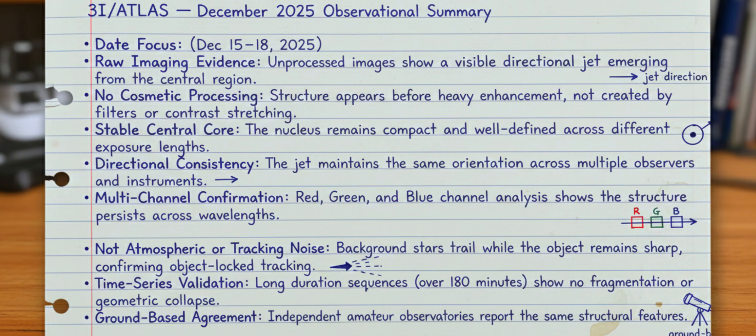Now, look at the core itself across different exposure lengths, different cameras, and different nights. The central region stays compact. No smearing, no breakup, no diffusion you'd expect if this object were unstable or fragmenting. The geometry holds. Even more telling, the orientation of the jet doesn't wander.